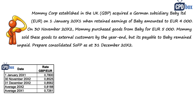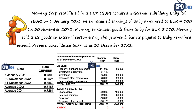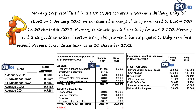We have a table of exchange rates — British pound to euro — at different dates, including average rates for individual years, plus statements of financial position and statements of profit or loss for both companies. Statements of Mommy are stated in British pounds and statements of Baby are stated in euros, which means we will have to translate at least one of them to the presentation currency.